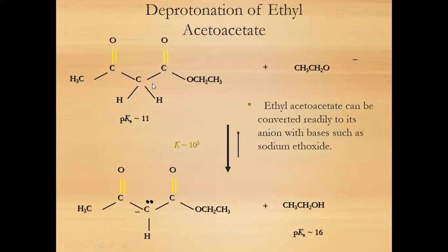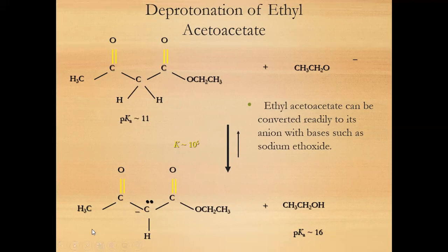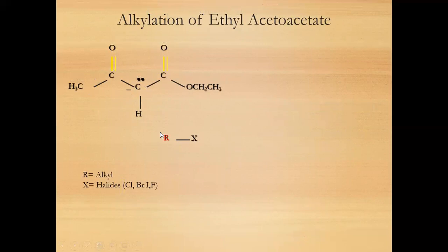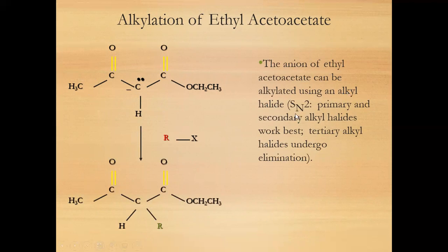For the mechanism, first deprotonation occurs through a strong base to form a carbanion. This carbanion is stabilized by the ester group and the ketone group. The alpha hydrogen has a pKa value of 11. This carbanion then reacts with an alkyl halide via an SN2 mechanism. Primary and secondary alkyl halides work best; tertiary alkyl halides would undergo elimination.